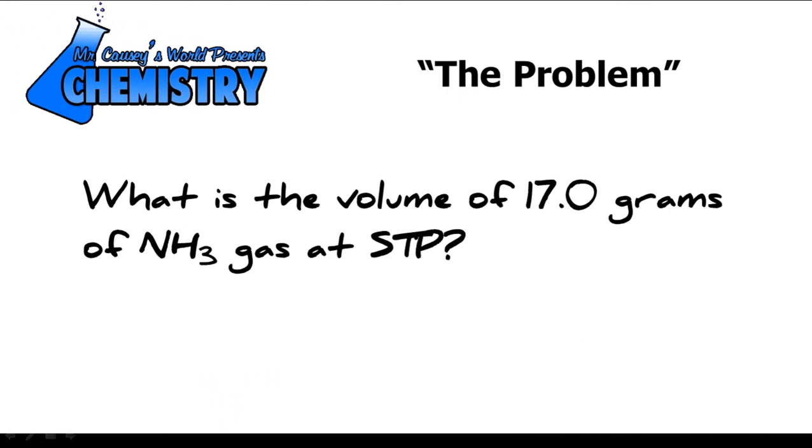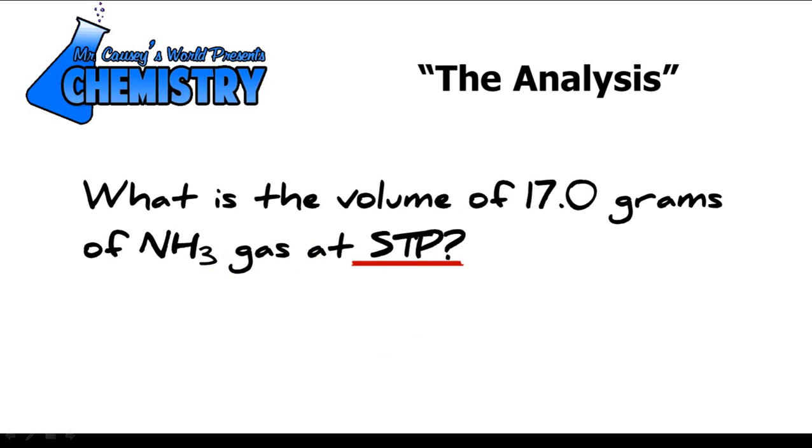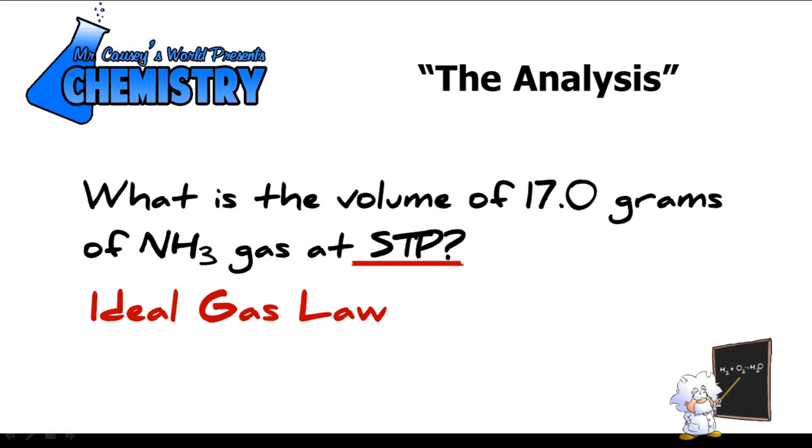What is the volume of 17 grams of ammonia gas at STP? Well, the first thing we want to do is analyze the problem. We have volume, which is what we're looking for. And then we have a gas and we have STP, which means standard temperature and pressure. So this is a job for the ideal gas law.